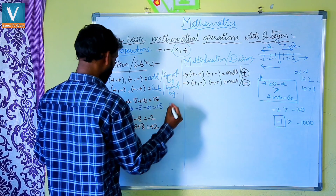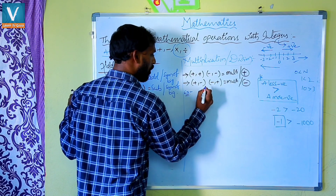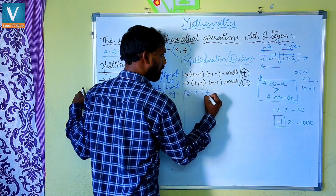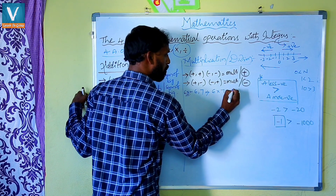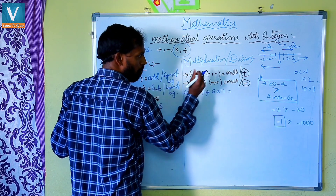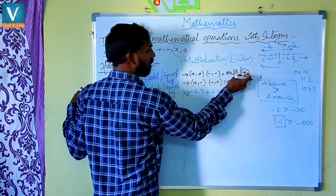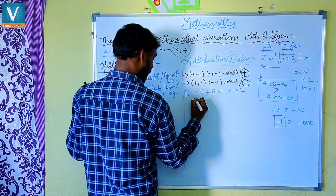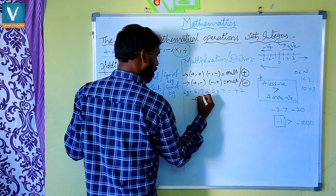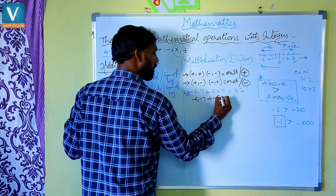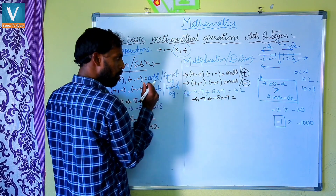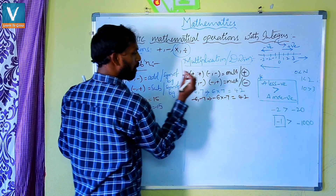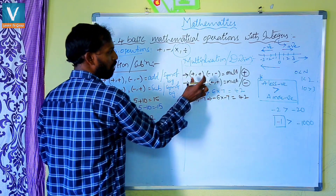Let us check with examples. First: I am taking 6 and 7, both positive. This implies 6 into 7. First we multiply: 6 sevens are 42. Both are same sign (positive), so the answer is positive 42. Second condition: both are negative — minus 6 and minus 7. This implies minus 6 into minus 7. First we multiply: 6 sevens are 42. Two are negative — same signs — so we give positive. The answer is positive 42.